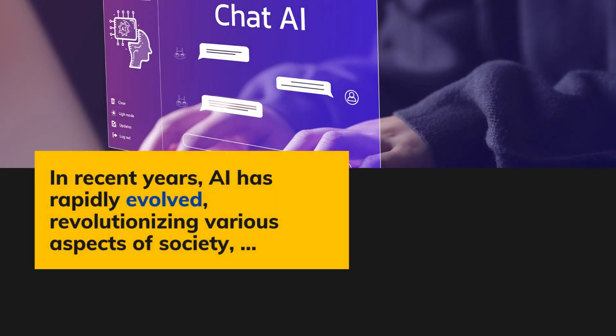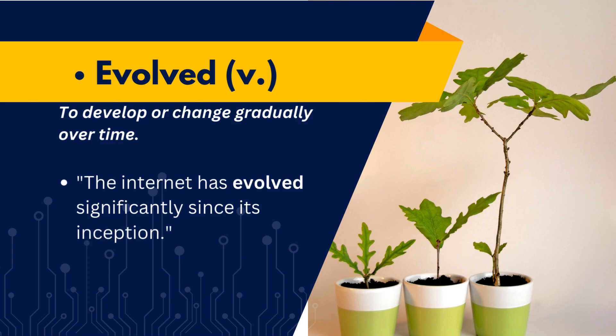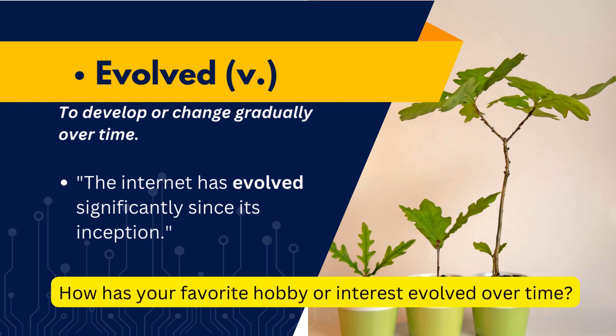In recent years, AI has rapidly evolved, revolutionizing various aspects of society. When we say something has evolved, we mean it has developed or changed gradually. Take the Internet, for instance. Since its inception, the Internet has evolved significantly — it's gone from a basic network of computers to a vast, complex web of information and communication that we rely on every day. Try to answer the question: how has your favorite hobby or interest evolved over time?